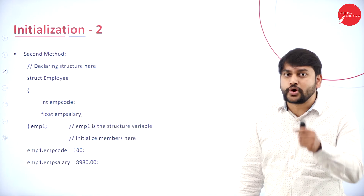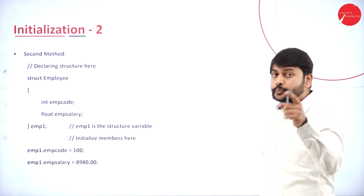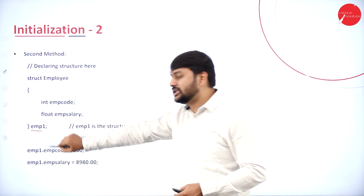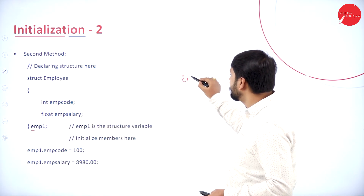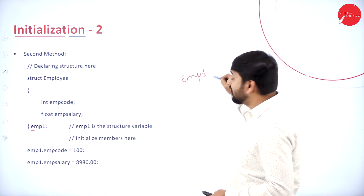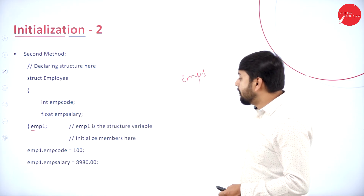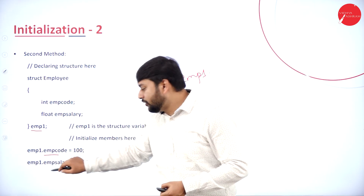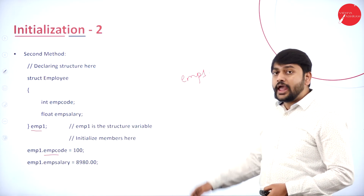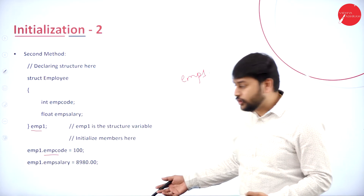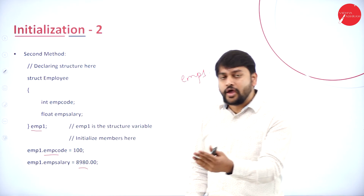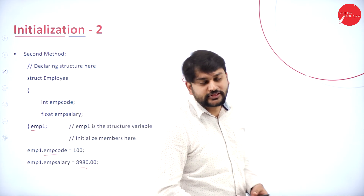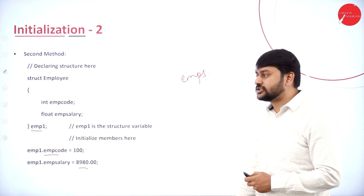The second method uses the dot operator to initialize individual members. Using the same structure and variable 'emp1', I write: 'emp1.employee_code = 100' and 'emp1.employee_salary = 8980.00'. This is the second way of initializing values to the members of a structure.